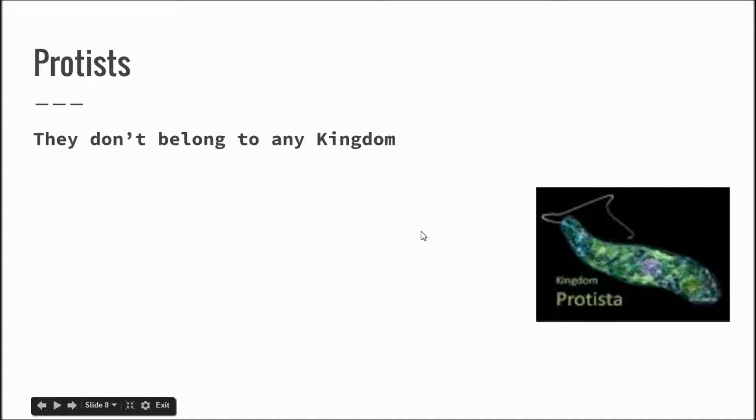Protists do not belong to any other group, which is why we put them into their own kingdom. Some protists are like plants and some are like animals. An example of a protist is an amoeba.